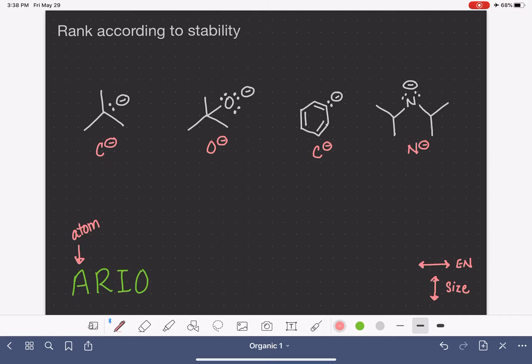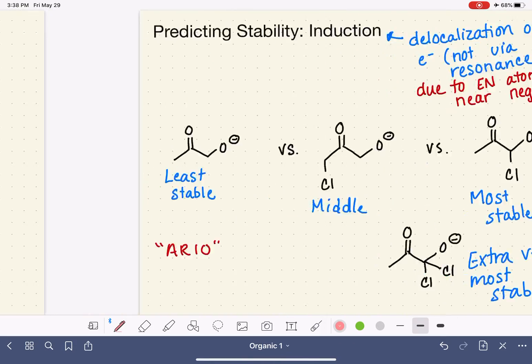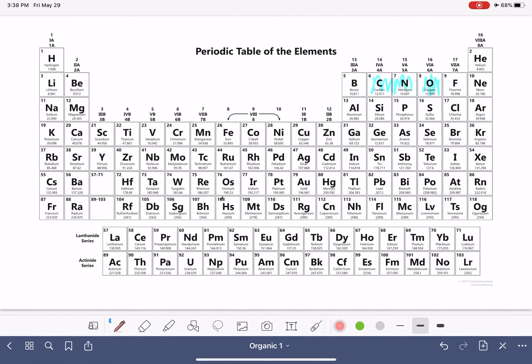So let's go back to our periodic table and let's see where those elements are relative to each other. They are all in the same row and they are all side by side. So that means that we are going to be using their electronegativity to predict stability.